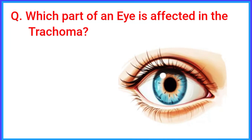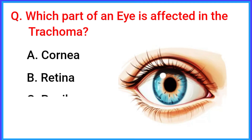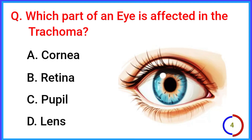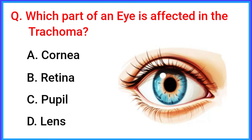Which part of an eye is affected in trachoma? The correct answer is option A: cornea.